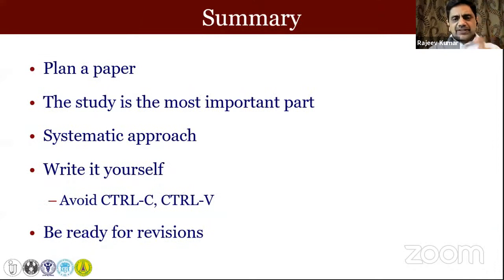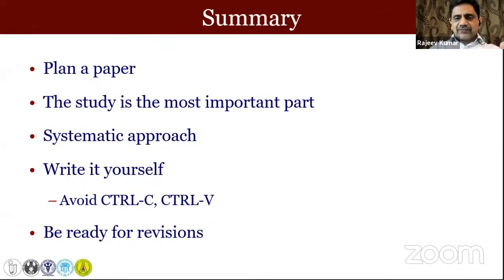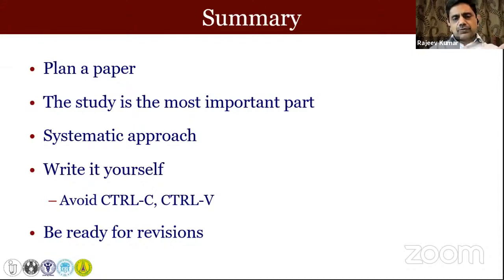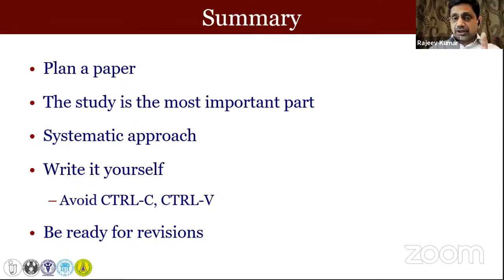I want to talk briefly about impact factors. The only impact factor that matters is the one given by Thomson Reuters, published in the Journal Citation Reports or JCR. It's not a random impact factor that anybody can give you. There's something called a Pavlov impact factor, an Indian impact factor, Index Copernicus impact factor — this is all fraud. The only impact factor still acceptable as a measure of quality is one given by Thomson Reuters for journals listed in the Science Citation Index Expanded. The IJU itself does not have a Science Citation Index impact factor. Be very careful when someone claims they have an impact factor.